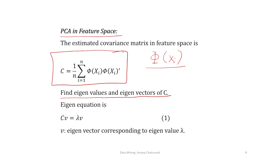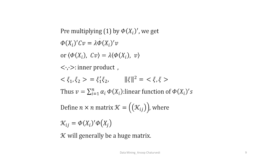The eigenvector equation is Cv = λv, just like the traditional principal component analysis, where v is the eigenvector corresponding to eigenvalue λ. We pre-multiply this equation by φ(x_i)^T to obtain φ(x_i)^T Cv = λ φ(x_i)^T v. The left-hand side is the inner product of φ(x_i) and Cv, and the right-hand side is λ times the inner product of φ(x_i) and v.